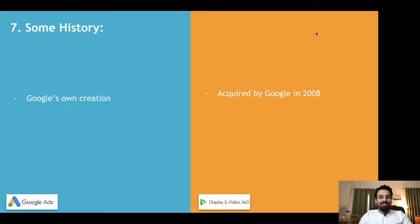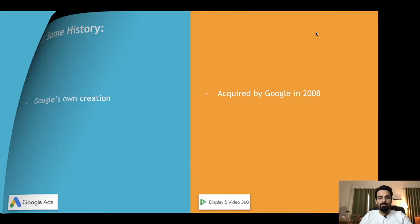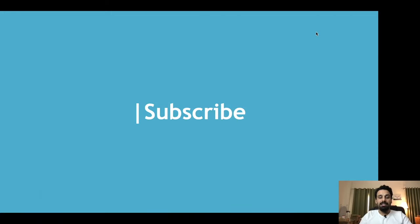The seventh difference is the origin of each platform. Google Ads was developed by Google itself, whereas Google acquired DoubleClick as a company in 2008. DoubleClick had its own stack of marketing platforms including DoubleClick Bid Manager, DoubleClick for Advertisers, and DoubleClick for Publishers — similar to how Google acquired YouTube.